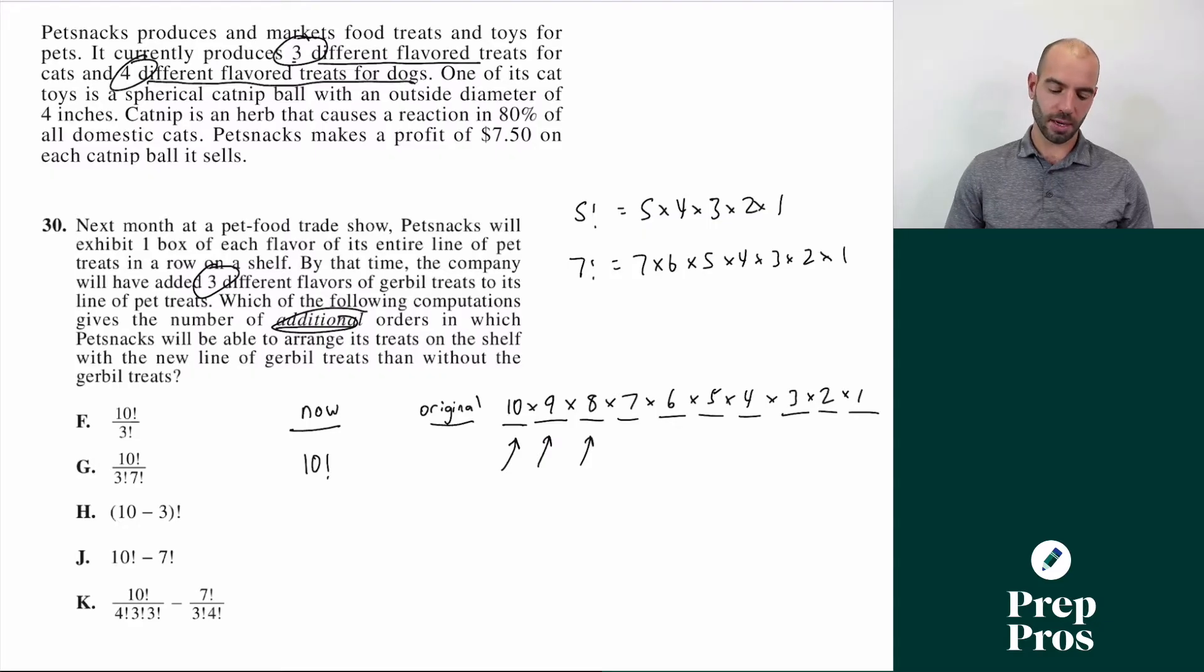Now originally, before we had the new three gerbil treats, there were only seven different things to put on the shelf. So if we set those up, it'd be seven options for the first, then six, five, four, three, two, one, which we can write as seven factorial. The question asks for the additional orders, so it'd be our 10 factorial minus our seven factorial, which is how we get to the correct answer of J.